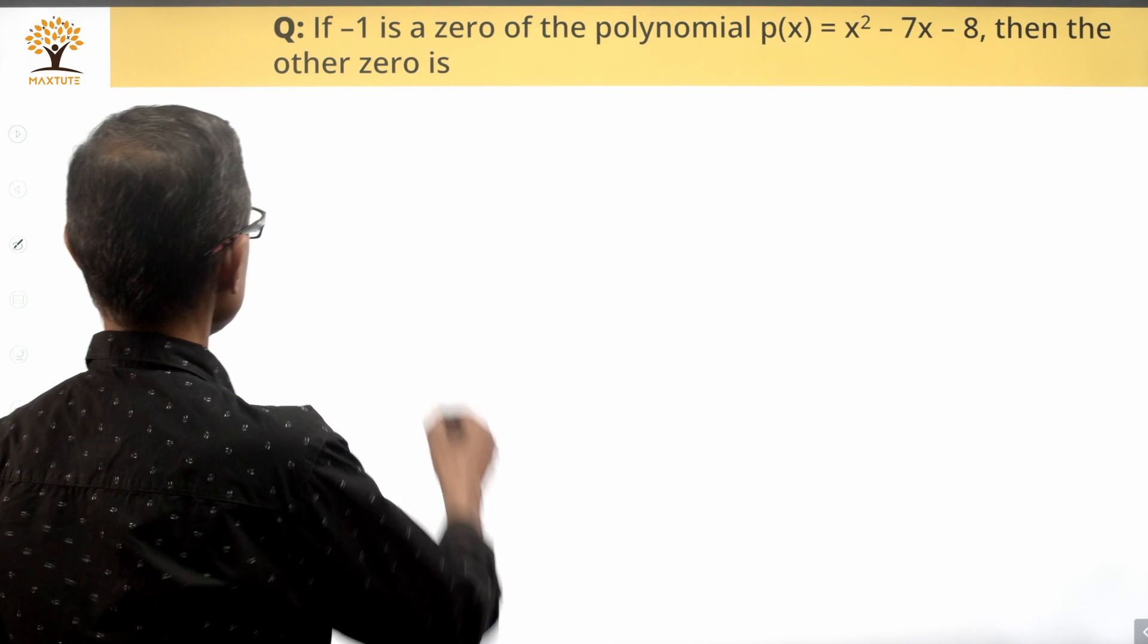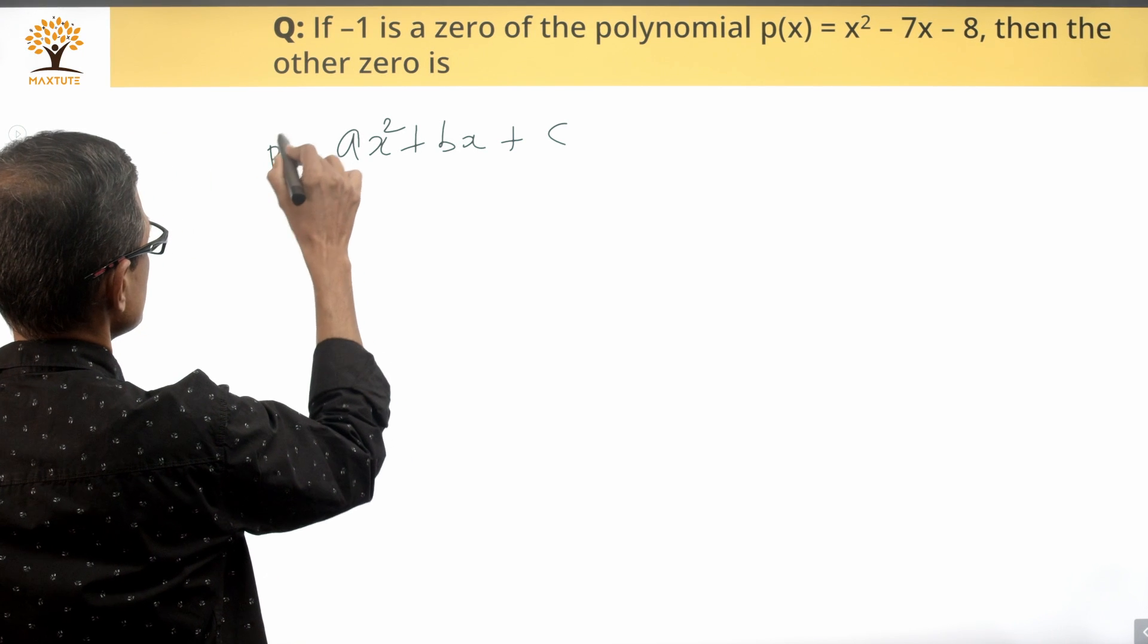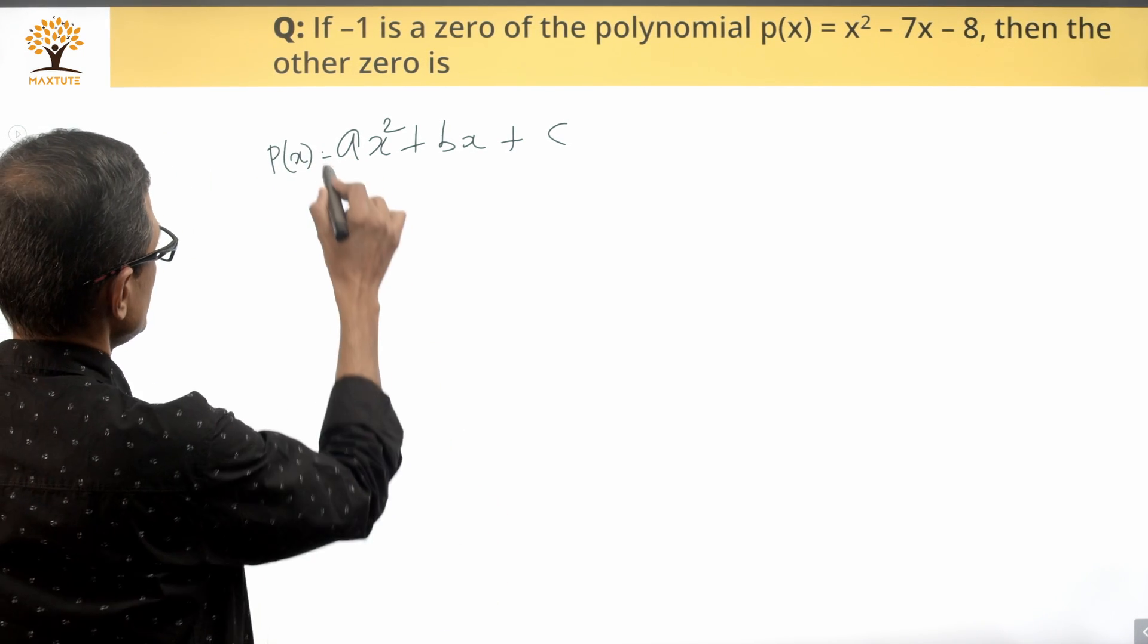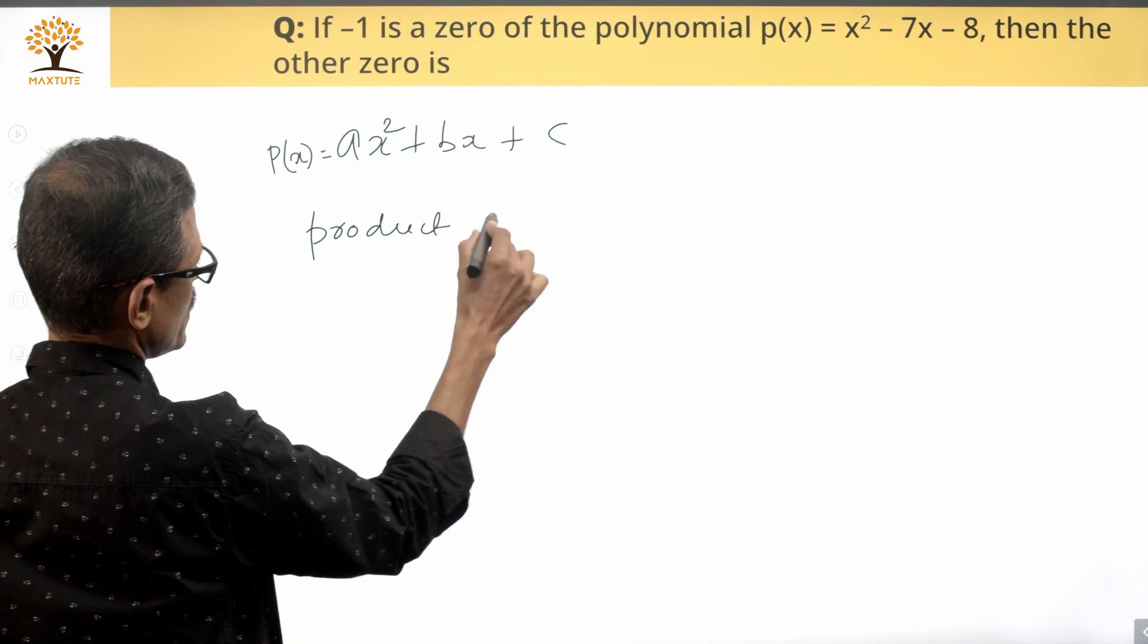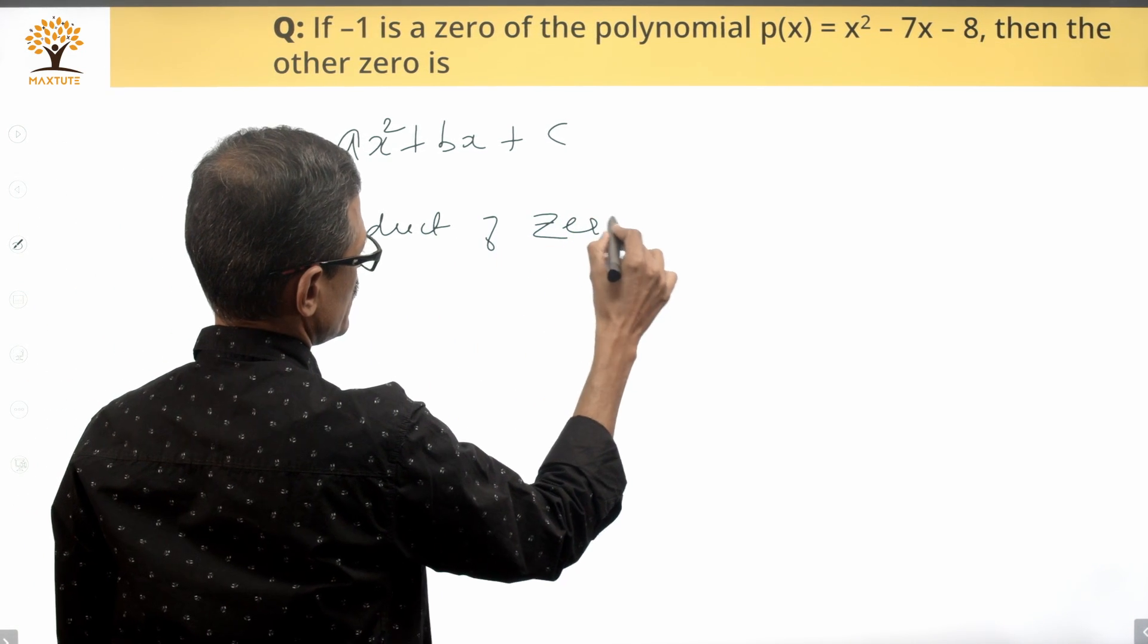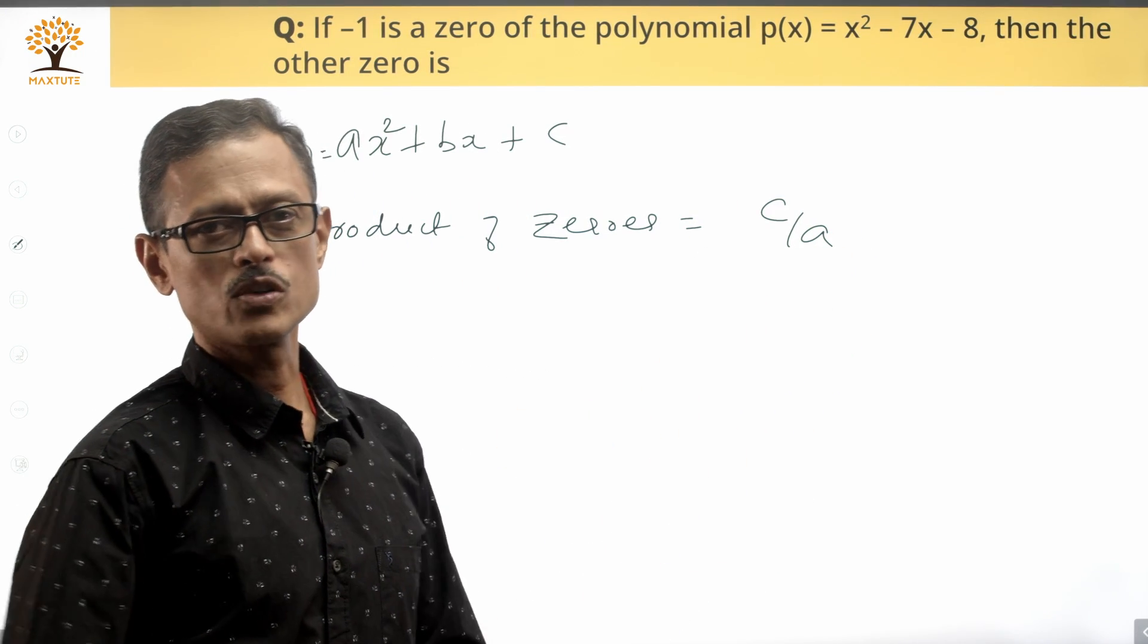If we have a quadratic polynomial of the form ax² + bx + c, let's say p(x) is equal to this, then the product of its zeros is equal to c/a. This is based on the coefficients of the polynomial.